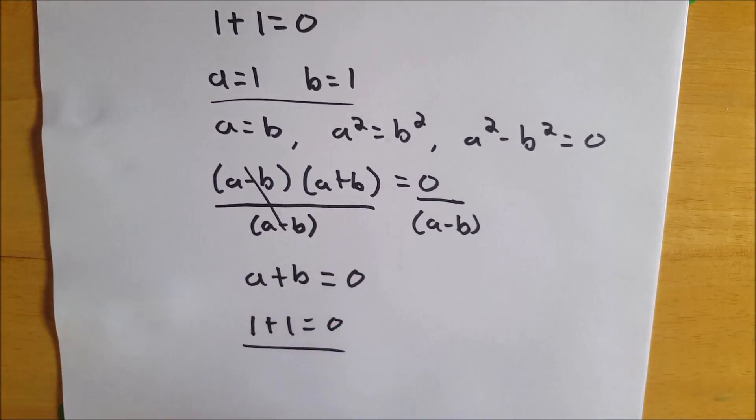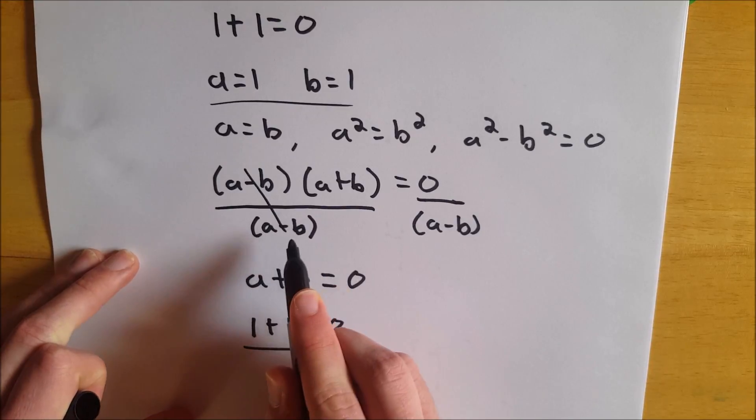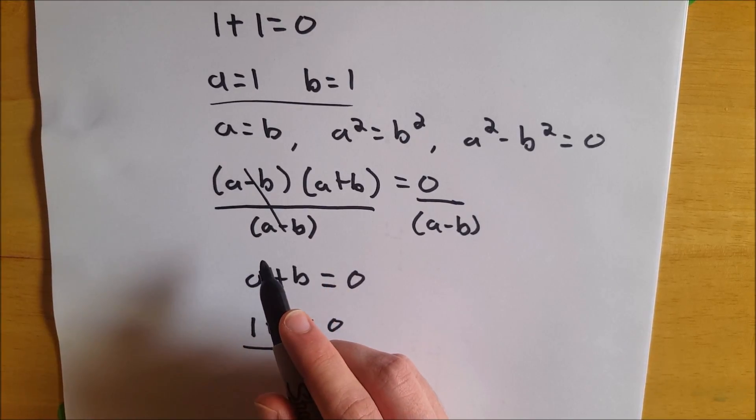Boom, the world ends, because 1 plus 1 equals 0. So what's wrong with that proof? Well, the sneaky part is right here in the division.